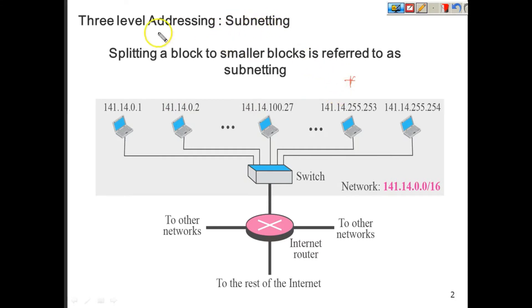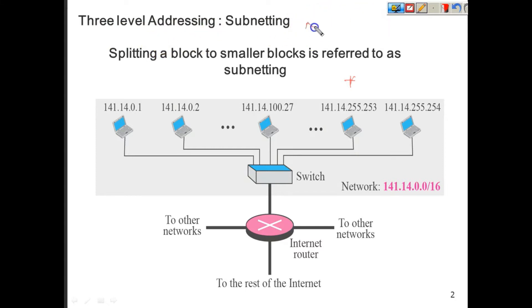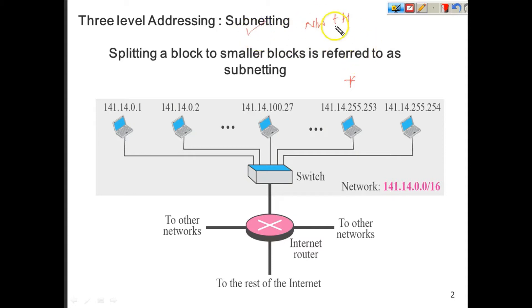Subnetting is also called three-label addressing. Two-label addressing is a concept where the 32 bits is divided into network and host bits. Further, you can divide these bits into one more label, and that is called subnetting.